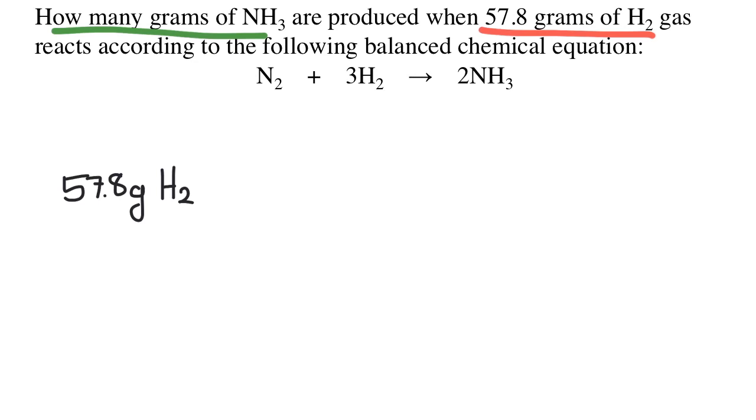But we'll then need to convert it to moles. So to convert from grams to moles, we divide by the molar mass of the substance. Hydrogen has a molar mass of 1 gram. And there's 2 hydrogens in H2. So it's 2 grams per mole.